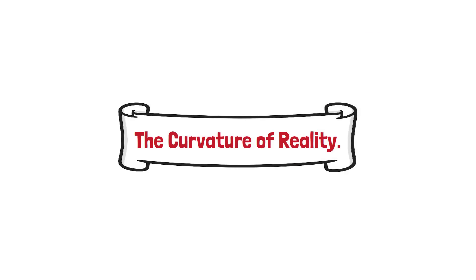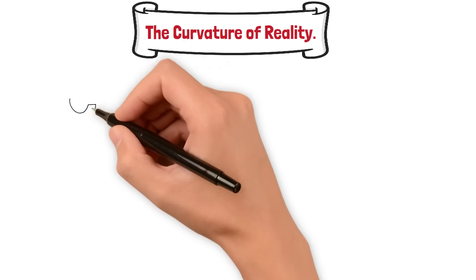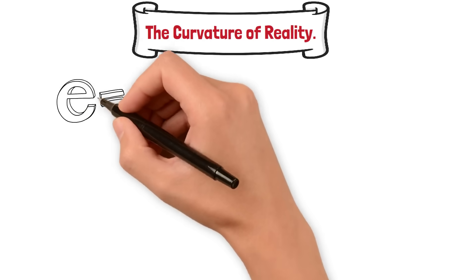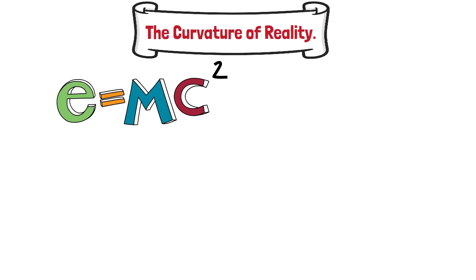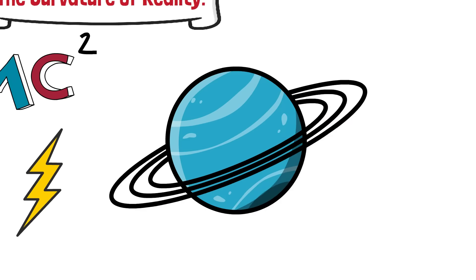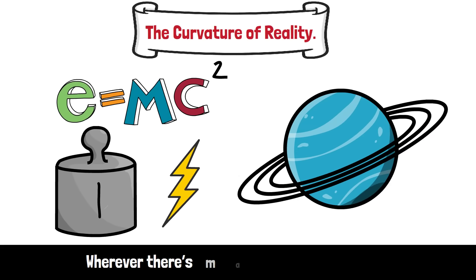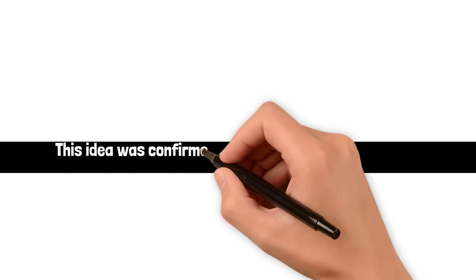The Curvature of Reality. Einstein's famous equation, E equals mc squared, linked energy and mass, showing that both can shape the geometry of space-time. Wherever there's mass or energy, there's curvature. This idea was confirmed through incredible experiments.